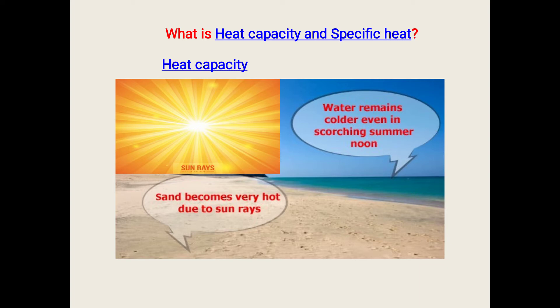As you can see in the image, there is sand, water, and sun rays. As the sun rays are falling on the sand and water, sand becomes very hot due to sun rays and water remains colder even in scorching summer noon.